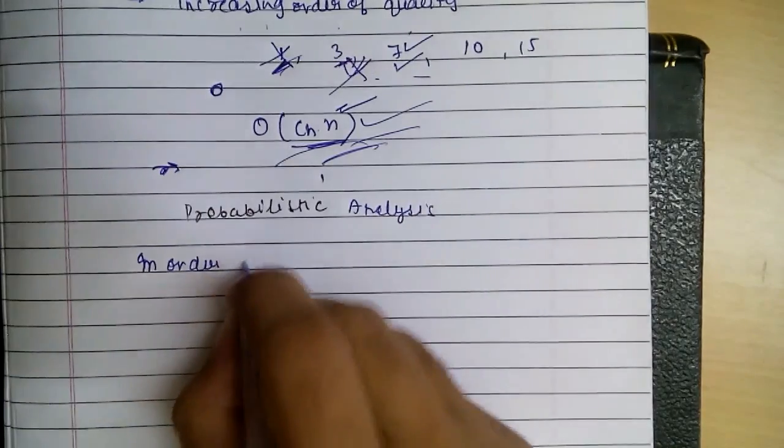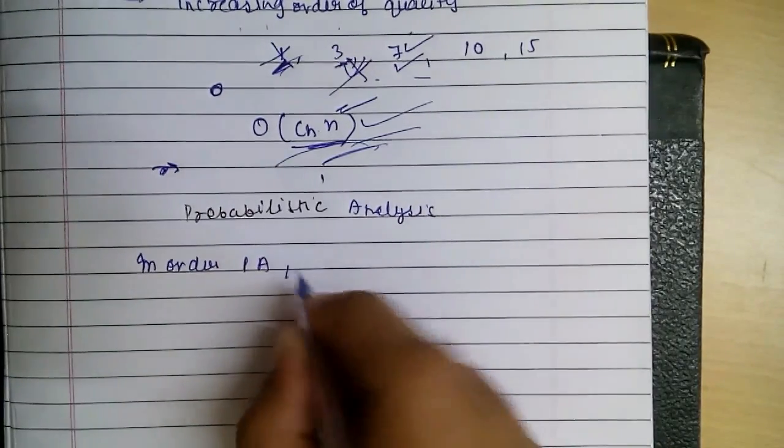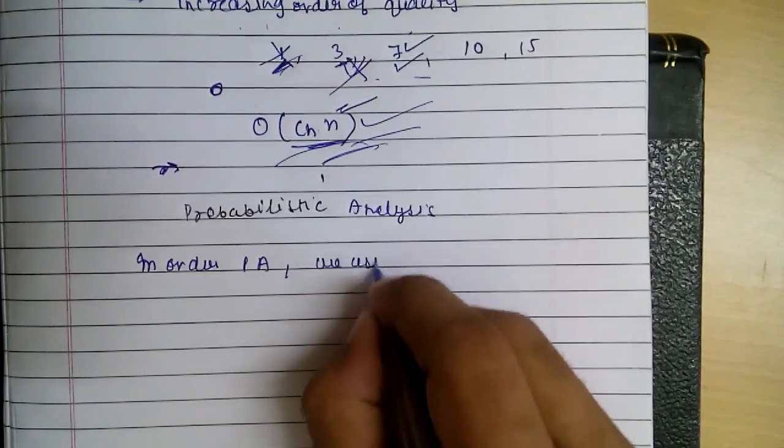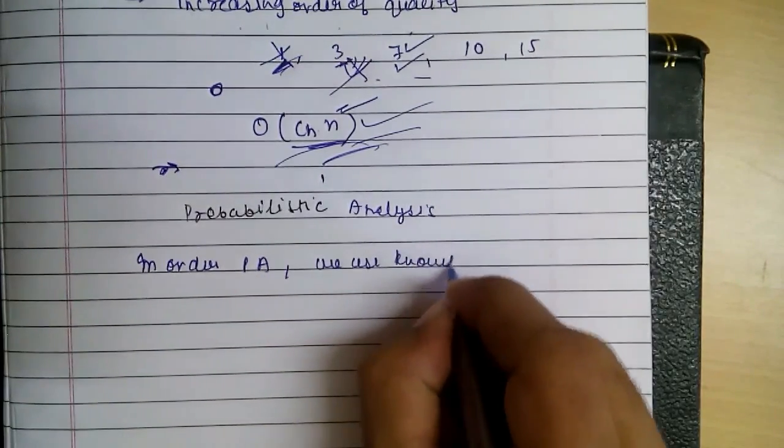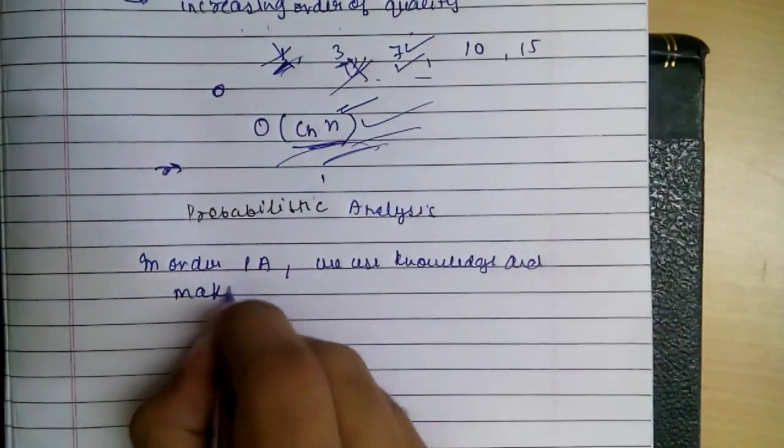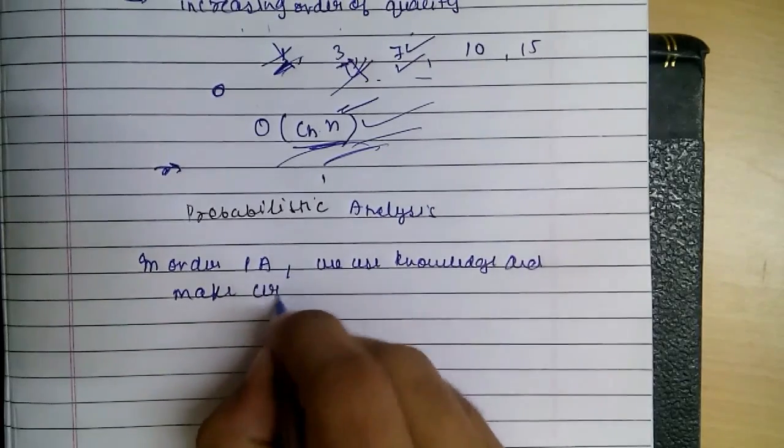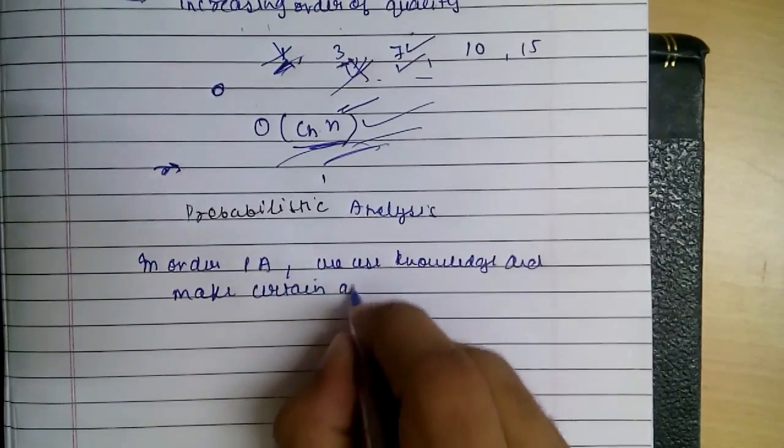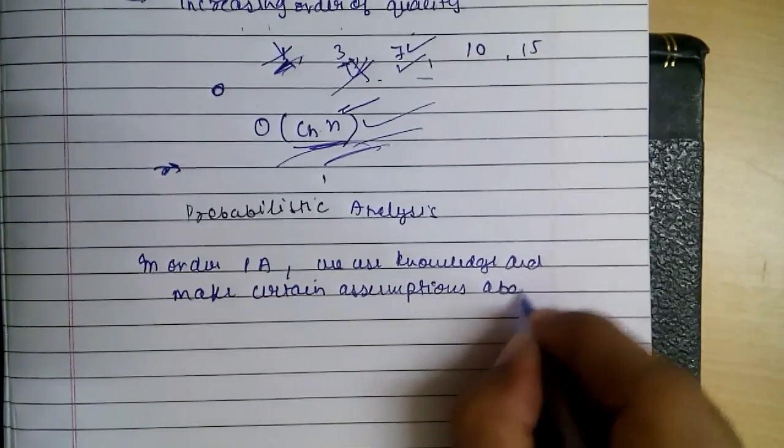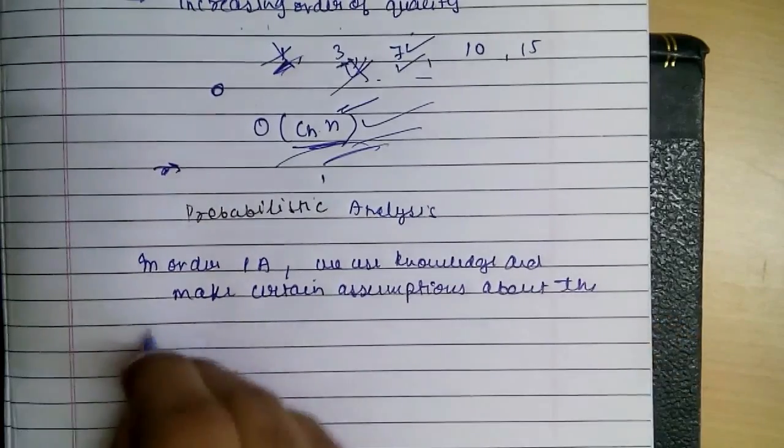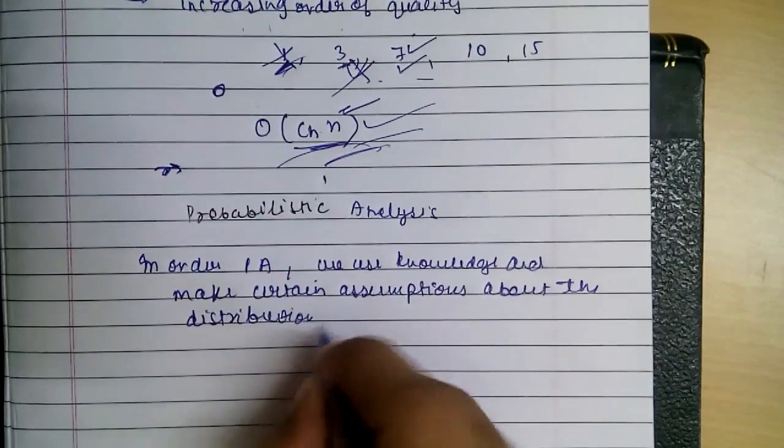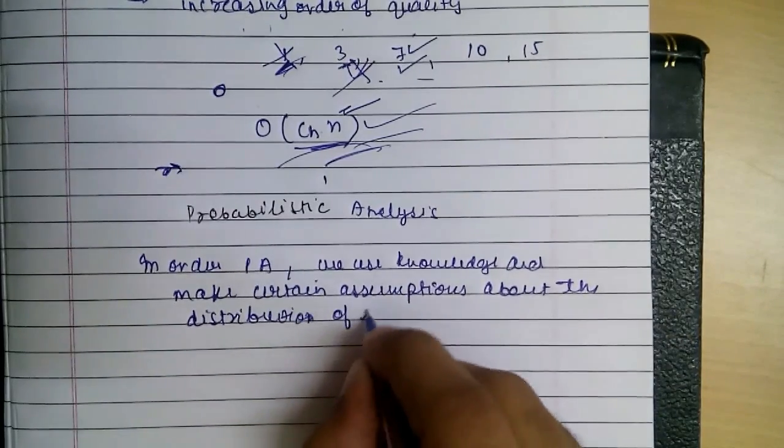In order to use probabilistic analysis, we use our knowledge of data and make certain assumptions about the distribution of data, that is the distribution of our inputs.